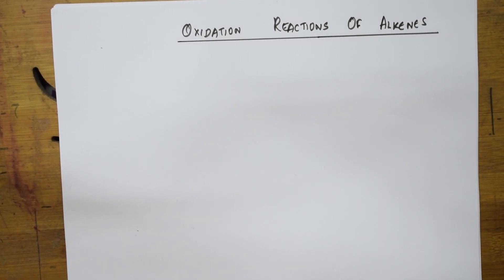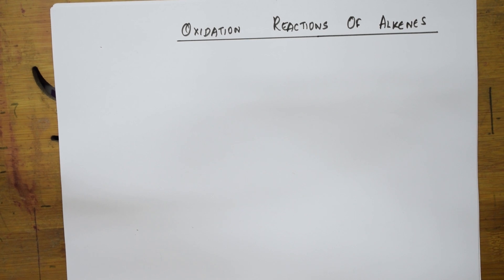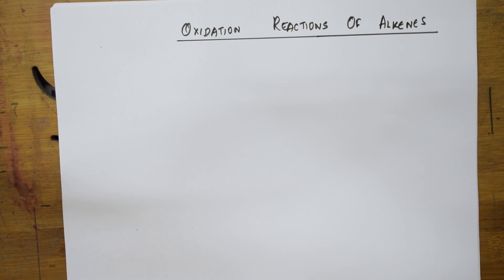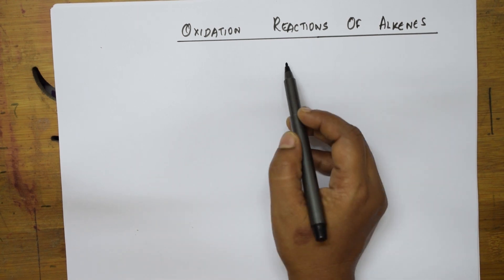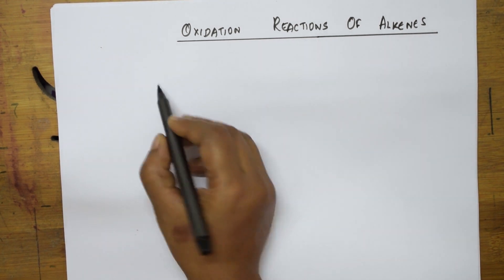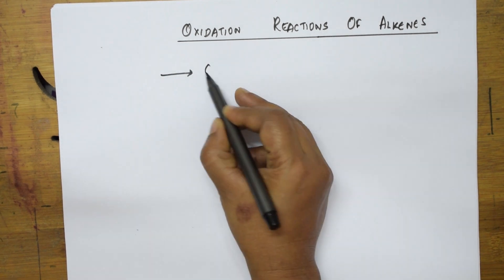Welcome students to one more session of your hydrocarbon chapter. Today we are going to study the most important concept of alkenes — that is oxidation reactions of alkenes. Oxidation is nothing but addition of oxygen, and whenever you are doing oxidation reactions you require something called an oxidizing agent. Very very important.